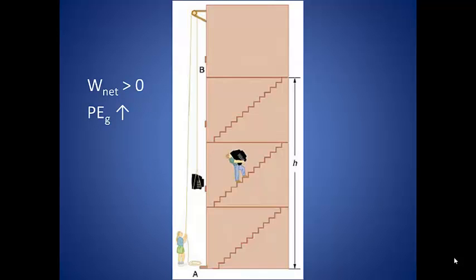If the object gets closer to the Earth, then we say that negative work is being done, and the gravitational potential energy decreases.